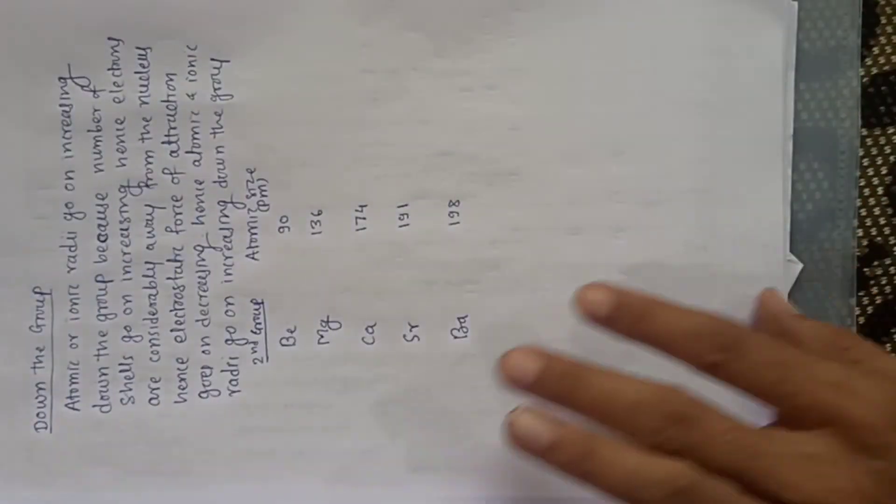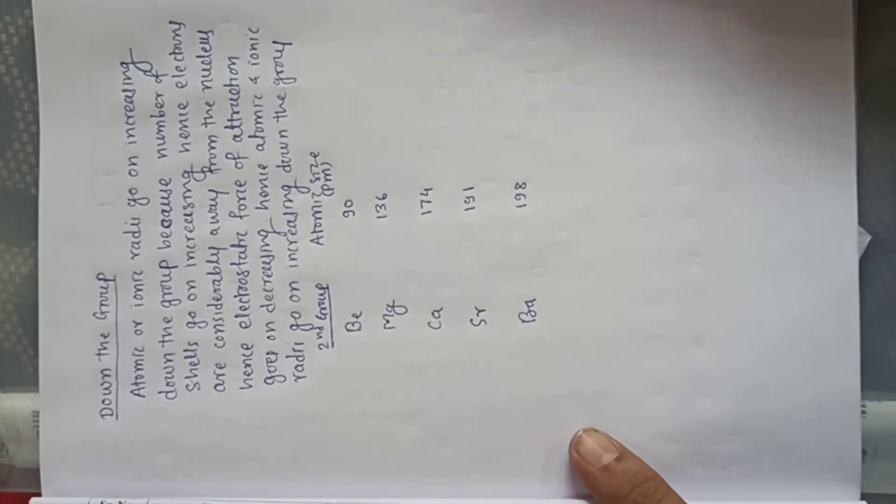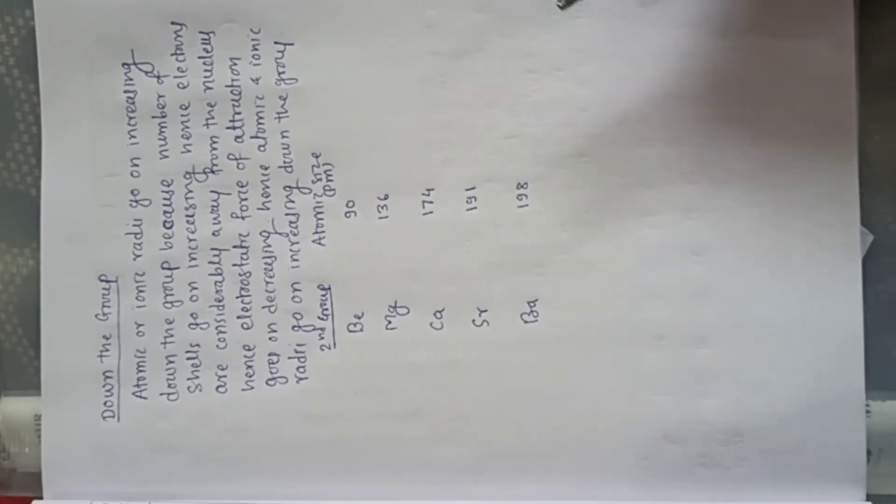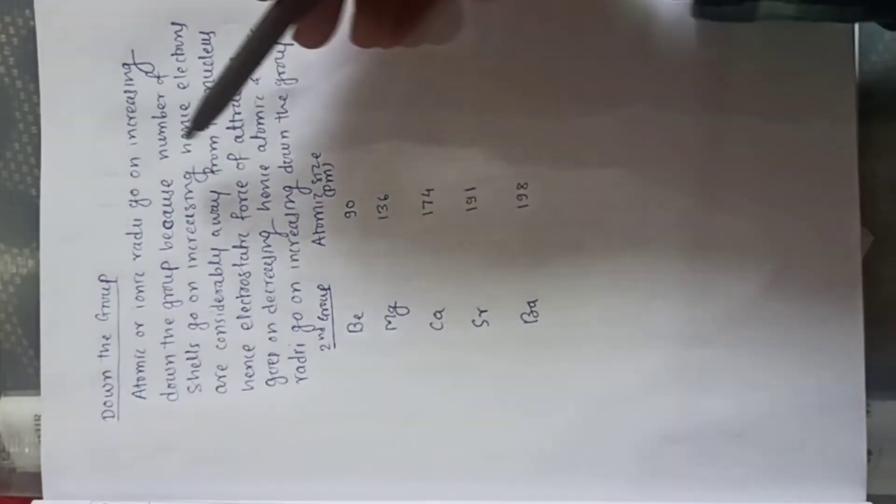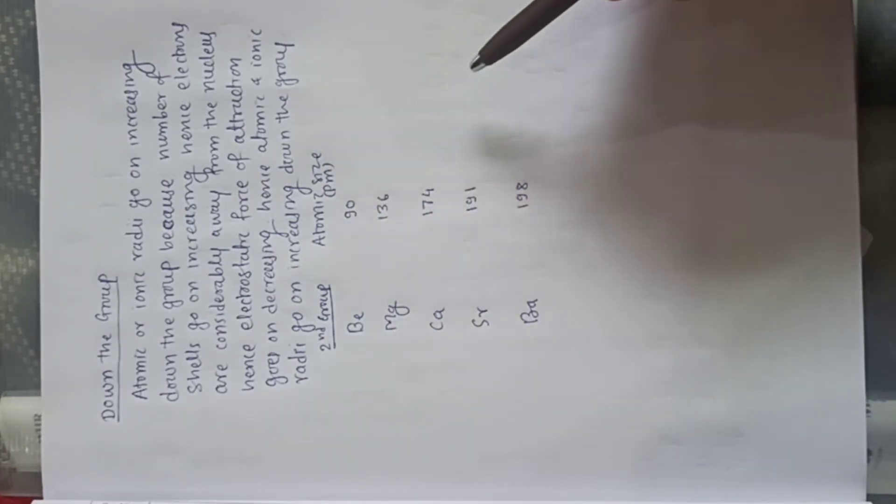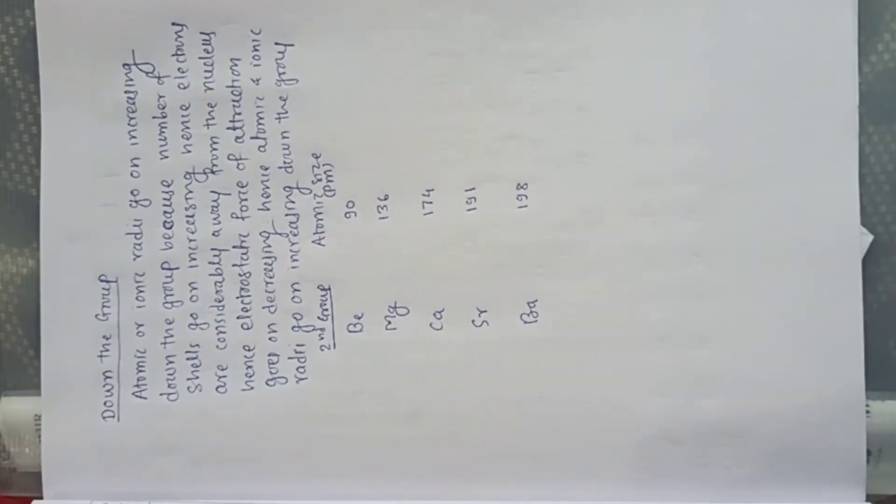Now, what happens to the atomic and ionic radii down the group? Down the group, the number of shells goes on increasing.